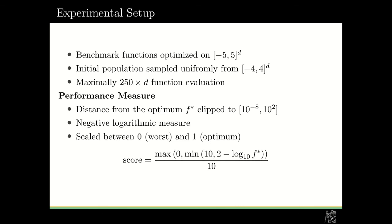The experimental setup: the benchmark functions are optimized in the d-dimensional cube from minus five to five, and the initial population is sampled uniformly from a smaller cube from minus four to four. At maximum we can create 250 times d function evaluations. To measure the performance of the optimization we used the distance from the optimum. We used the logarithmic distance and we scaled it between zero and one, and we actually reversed the order, so zero means the worst and one means that we reached the optimum.